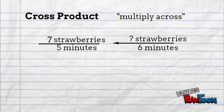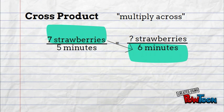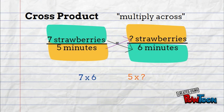Cross product means multiply across. So we take the numerator of one and multiply it by the denominator of the other. So 7 times 6 and 5 times our question mark.